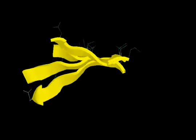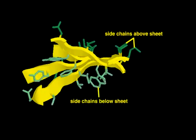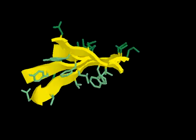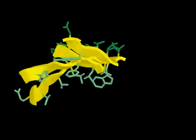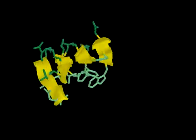The amino acid side chains from each strand alternately extend above and below the sheet, thereby allowing each side to have distinct properties from the other. Beta sheets are usually twisted and not completely flat.